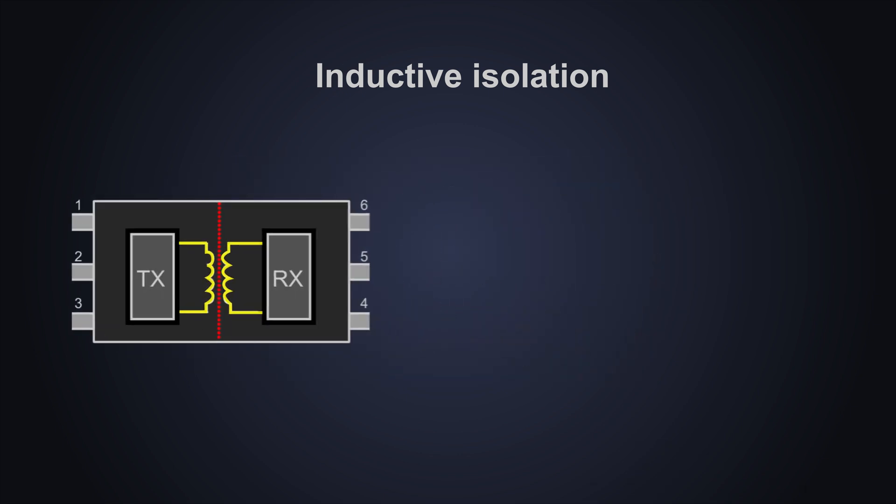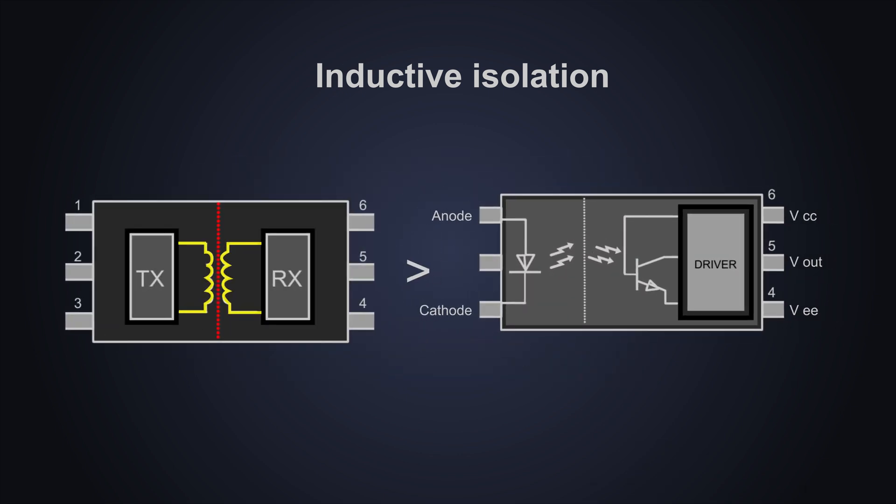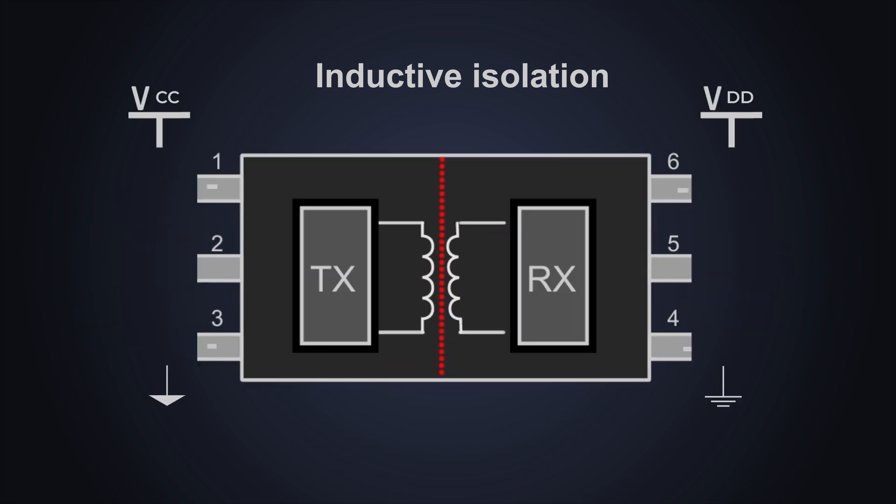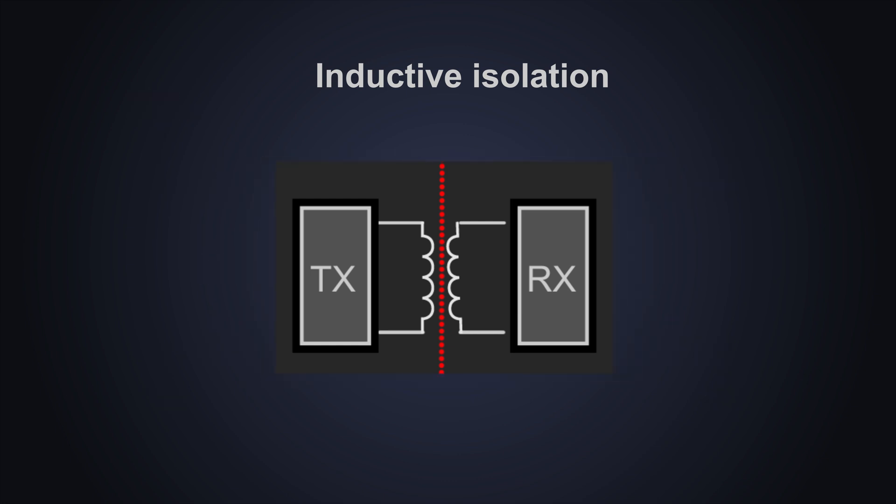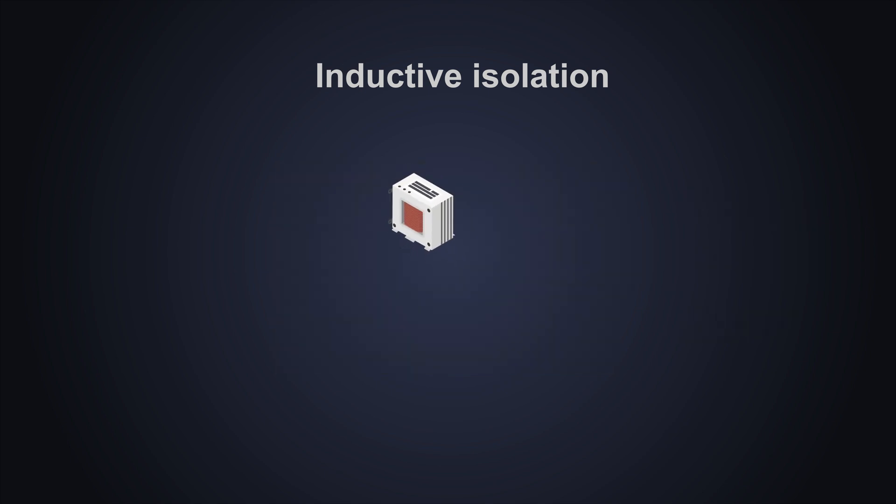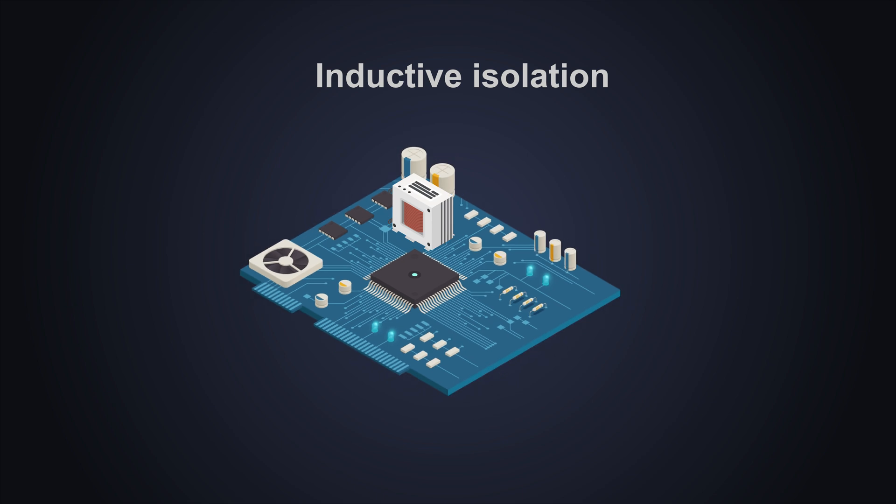The transformer based isolated drivers can transfer power in large amounts than optocoupler and sometimes they don't require secondary isolated power supply as well. It supports a high switching frequency and provides better EMI performance. It also supports high isolation voltage but due to the magnetizing coils used in transformer, the size of the circuit increases and becomes bulkier.